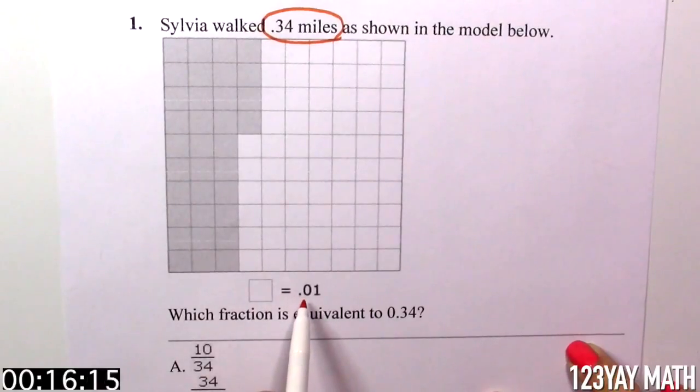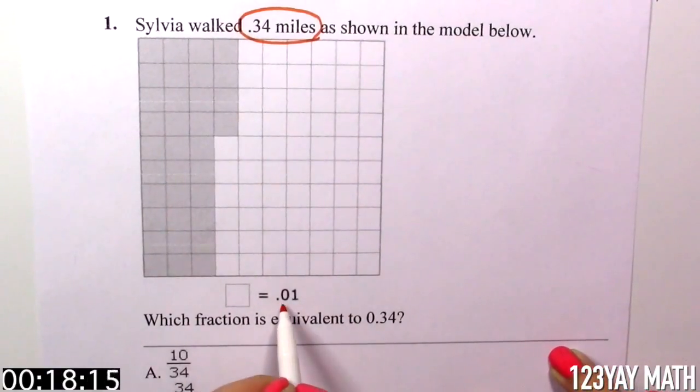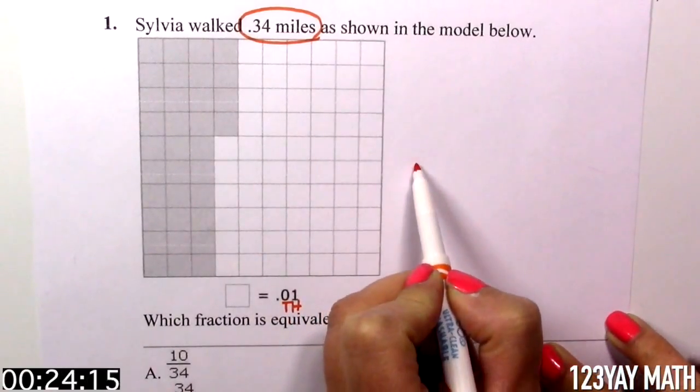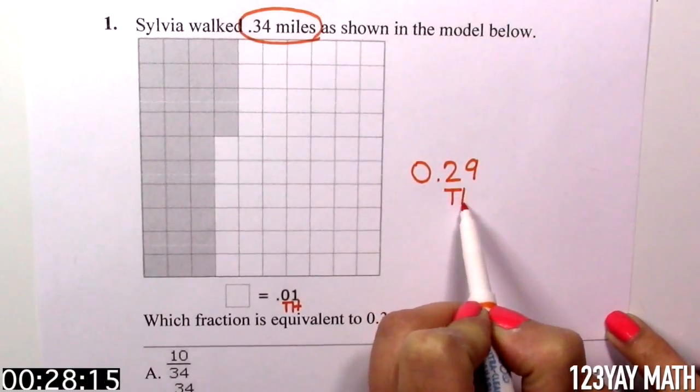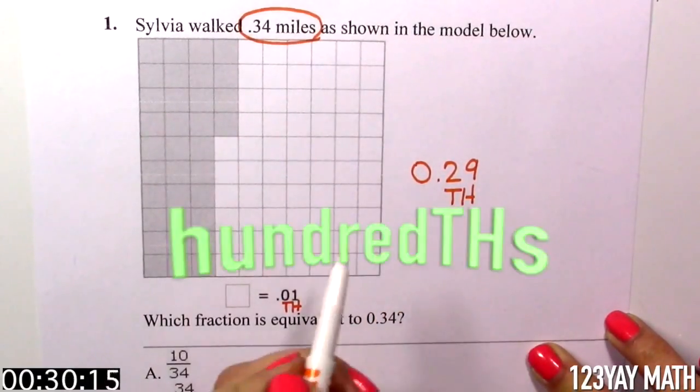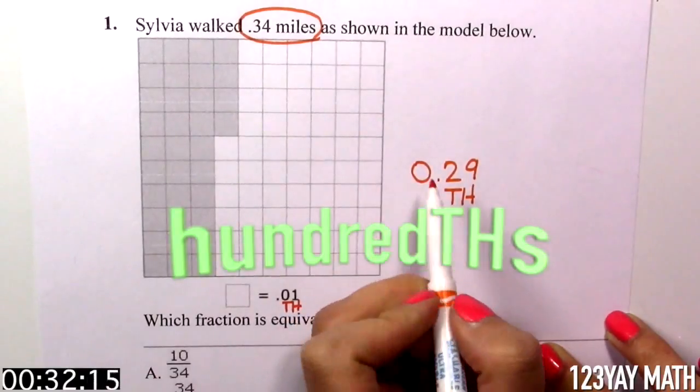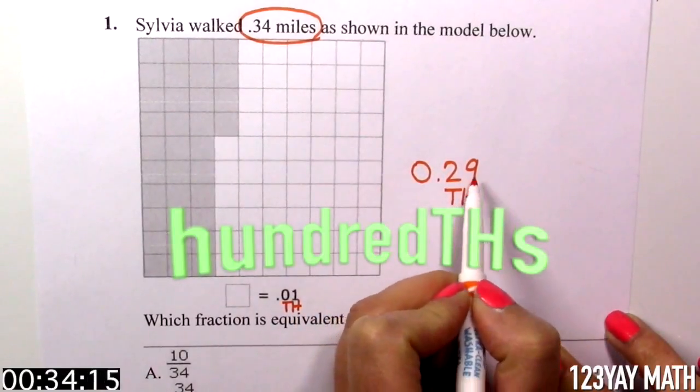Each square is 0.01. In other videos I explained that every time you see a decimal, you put the 'th' as in hundredths and thousandths. These are the tenths and these are the hundredths, so each one of these is one hundredth, and we have 34 hundredths.